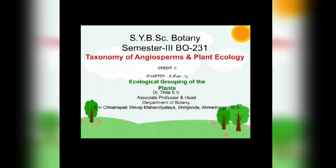Pneumatophores or breathing roots are found only in mangroves for gaseous exchange. They are characterized by the presence of numerous lenticels, which serve to absorb air that goes to the root below through the intercellular spaces in the cortex. In some mangroves, for example Rhizophora, stilt roots are developed for additional support because they grow in loose muddy areas and develop in a pyramidal shape.